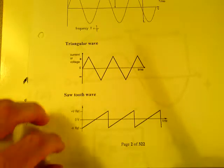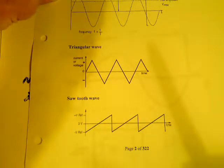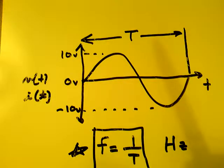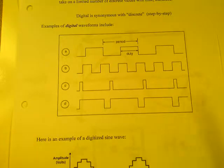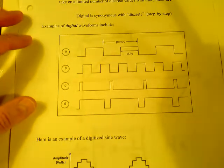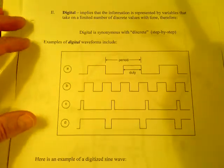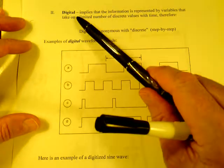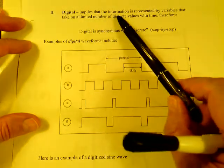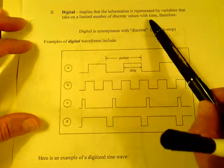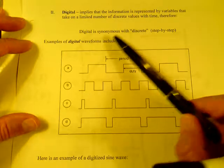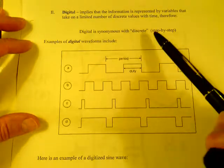Analog waveforms are synonymous with continuous waves. There's no discontinuities with analog. If you look on page number three, on page three we're going to talk about digital. Now, for this course, that's what's important. This is a digital systems class. So, digital implies that the information is represented by variables that take on a limited number of discrete values with time. Therefore, digital is synonymous with discrete or step-by-step.